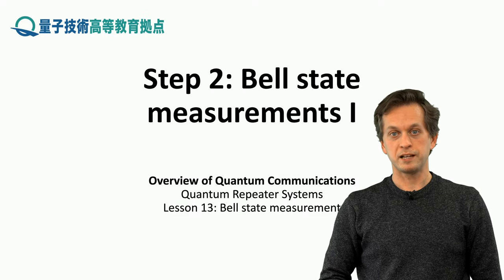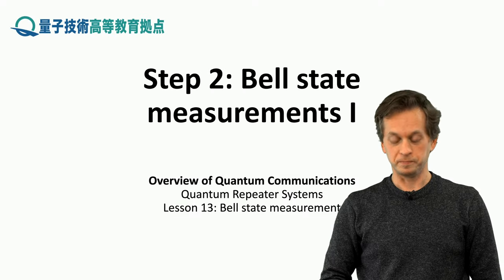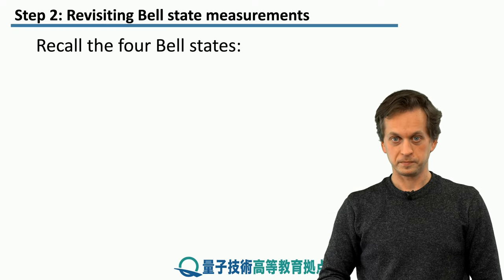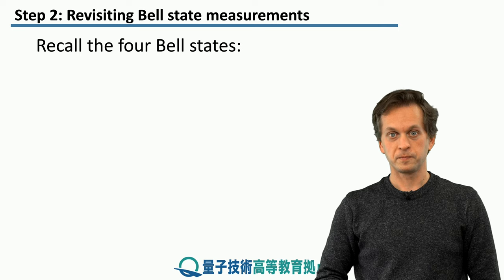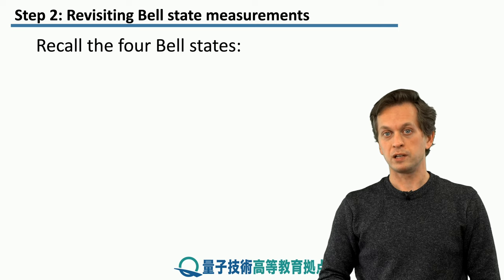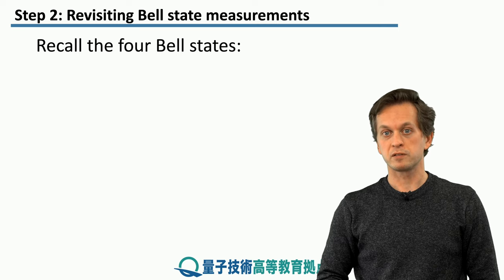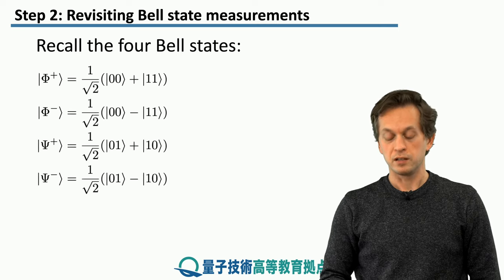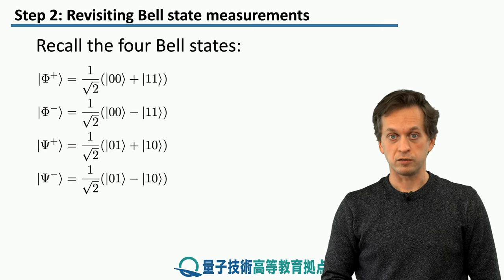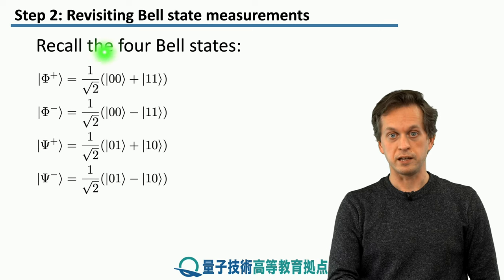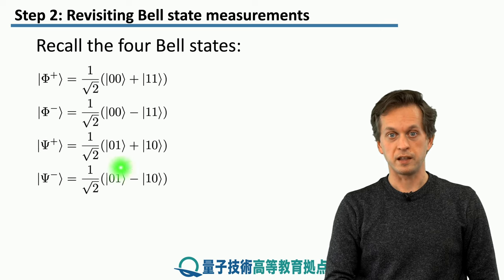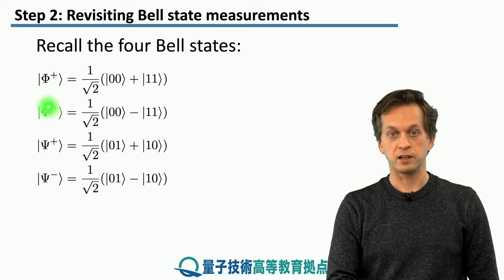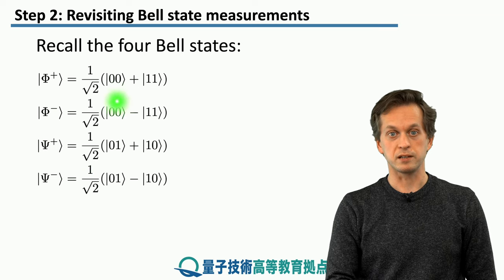Step 2: Bell state measurements 1. Let's remind ourselves what Bell states look like. Bell states are four entangled states, and they can be written in this form in the computational basis.